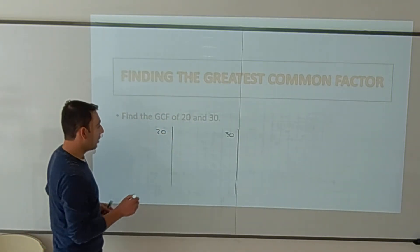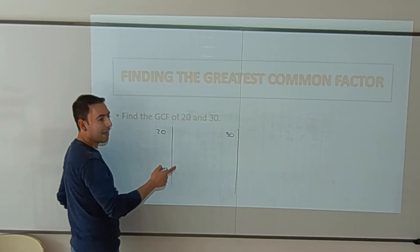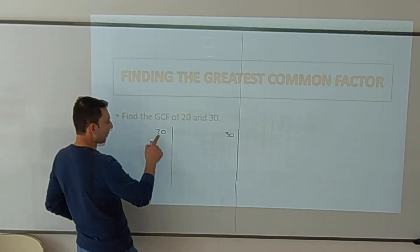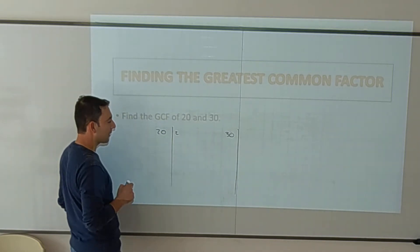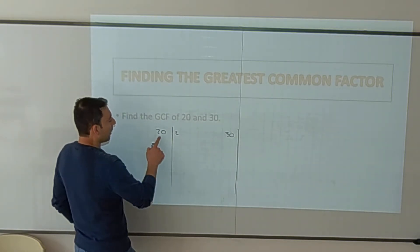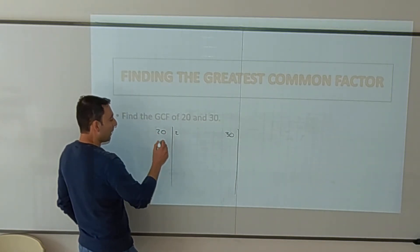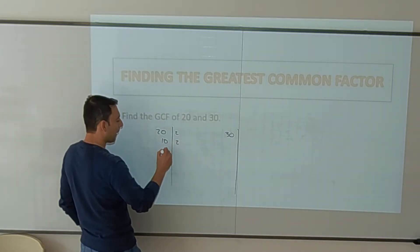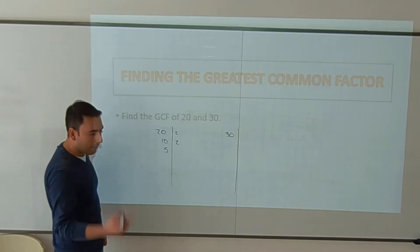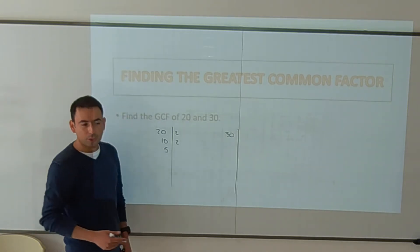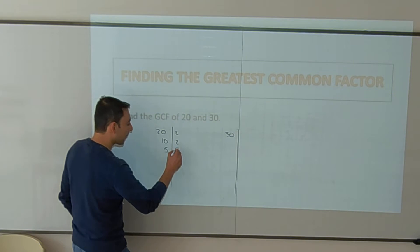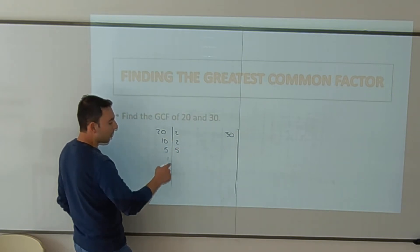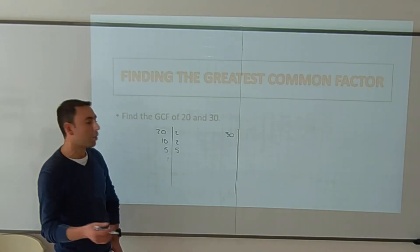Prime factorization means dividing a number by prime numbers, as small as possible. So, 20 divided by 2 — which is the smallest prime number — is 10. Then 10 divided by 2 is 5. 5 is not divisible by 2 or 3, but it is divisible by itself: 5 divided by 5 is 1. When the result is 1, we stop.